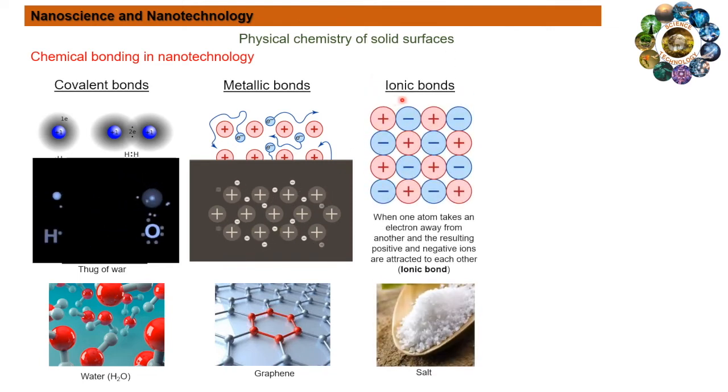The next bond type is ionic bond. Ionic bonding is the complete transfer of valency electrons between atoms. It is a type of chemical bond that generates two oppositely charged ions. In ionic bonds, the metal loses electrons to become a positively charged cation, whereas the non-metal accepts those electrons from the positively charged cation to become a negatively charged anion. Ionic bonds require an electron donor, often a metal, and an electron acceptor, a non-metal.